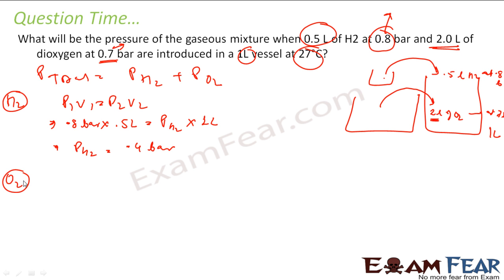Similarly, for oxygen, it is the same formula, P1V1 is equal to P2V2. Earlier, the pressure was 0.7 bar, volume was 2 liter. Now, the new pressure is something you have to find and the new volume is 1 liter. So, the new pressure will be 1.4 bar.